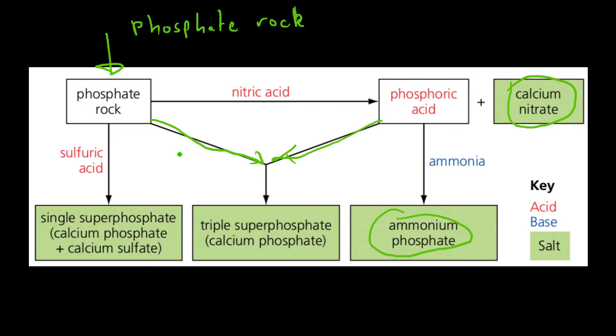Then phosphate rock plus other things is going to make our salts. So, phosphate rock plus your acids. If you add sulfuric acid, you get single superphosphate. If you add phosphoric acid, you get triple superphosphate. And bear in mind that if you add nitric acid, you make phosphoric acid, but you also make calcium nitrate, which is another important one. And that's basically it.